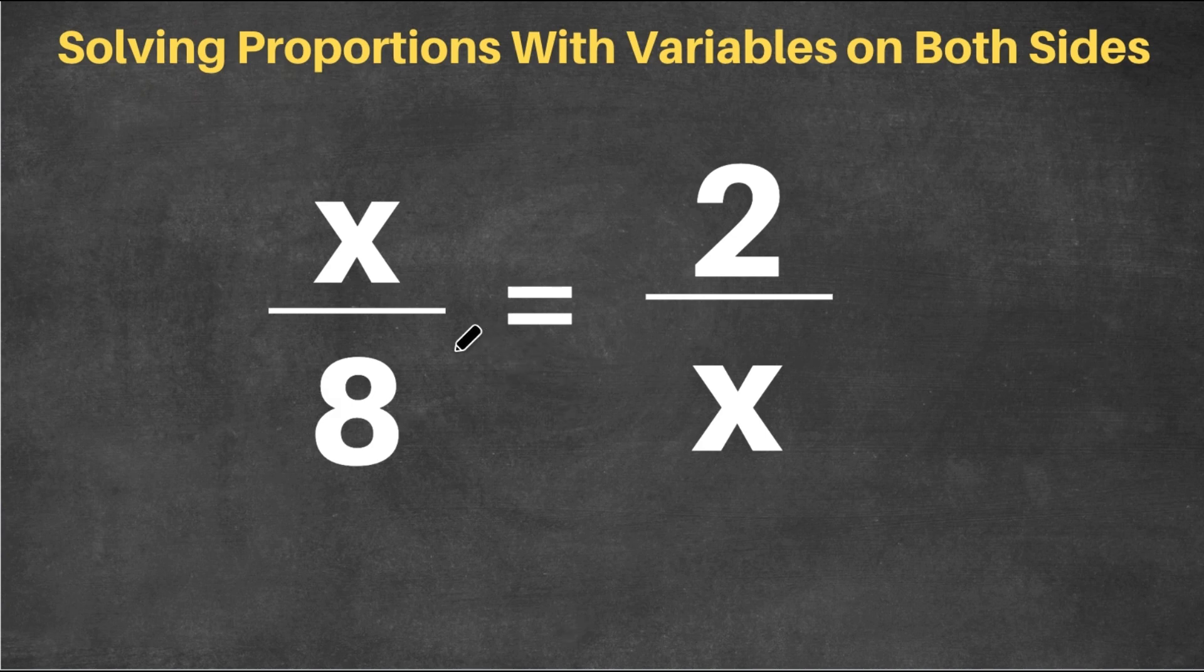So as you can see for this proportion, we have x over 8 equals 2 over x, and we have two variables, each on opposite sides.